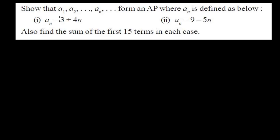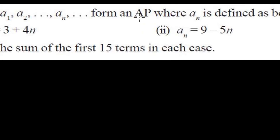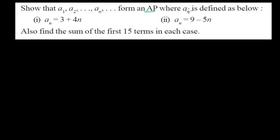Hi friends, here is another problem of arithmetic progression related to the sum of n terms. The question is asking to show that a₁, a₂, ..., aₙ, ... form an arithmetic progression where aₙ is defined as below. The nth term is equals to 3 + 4n, and in the second case the nth term is equals to 9 - 5n.